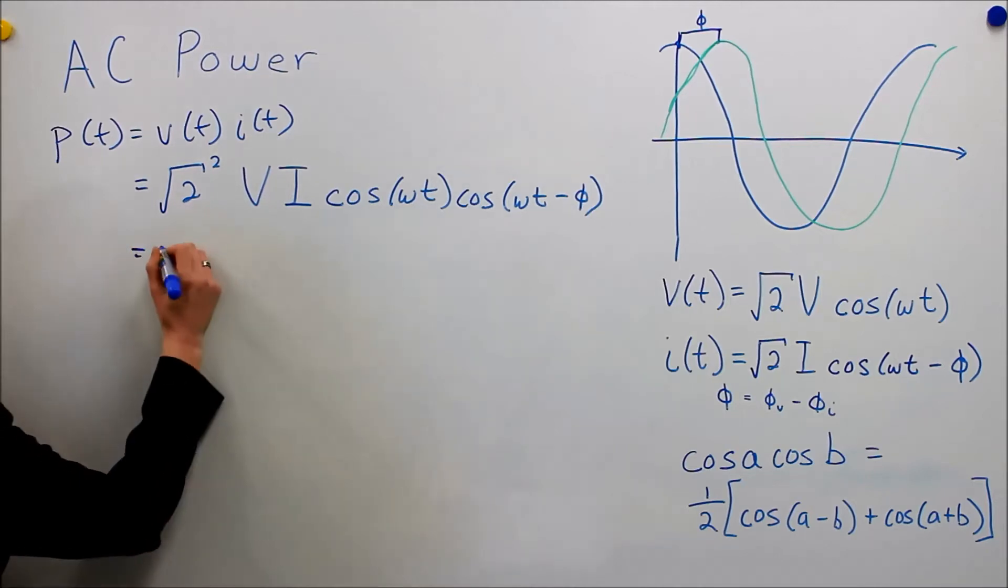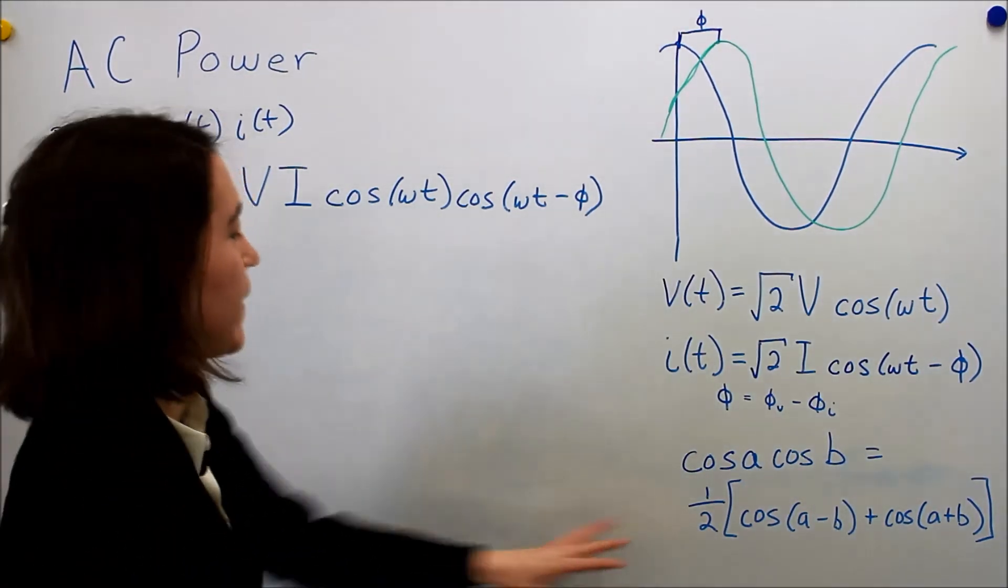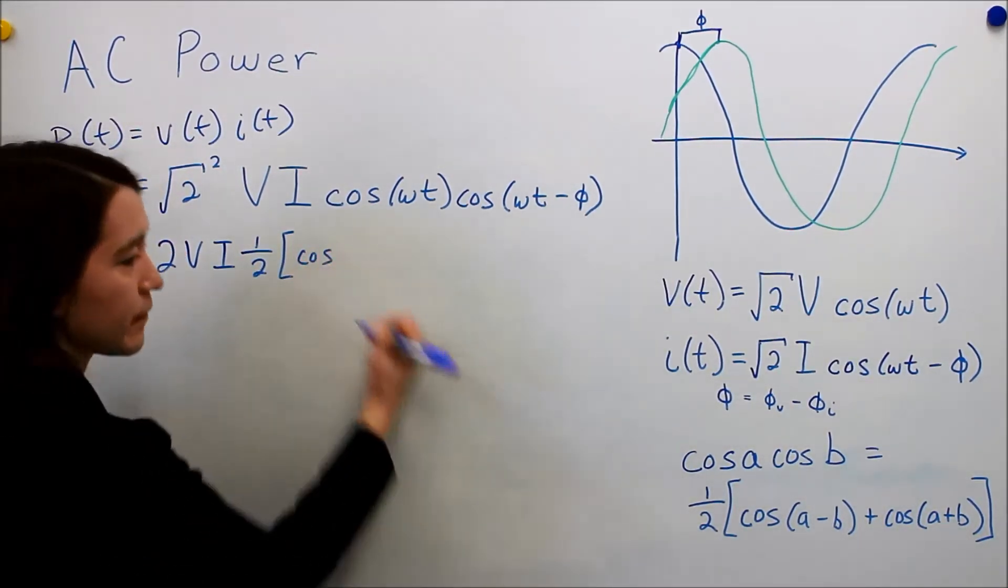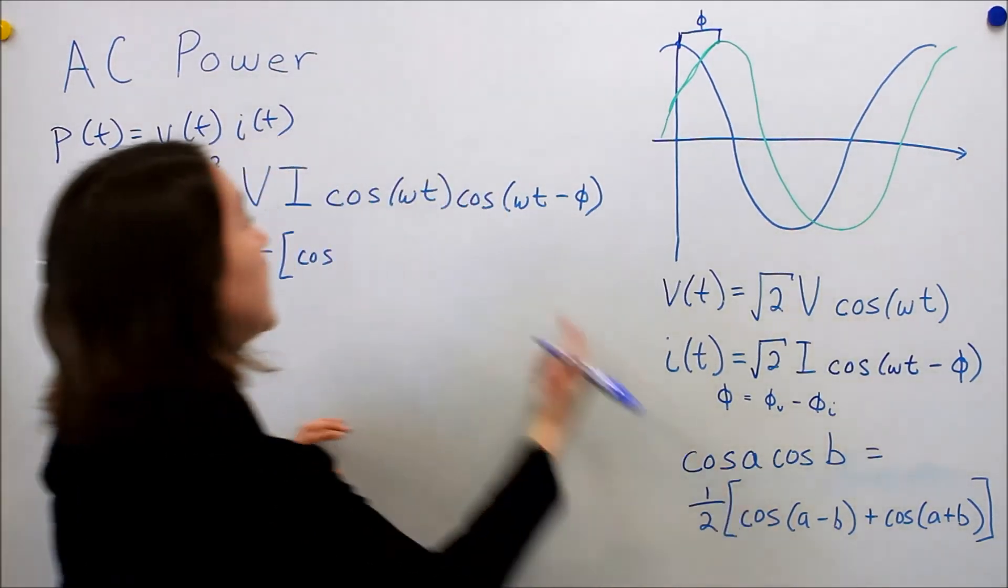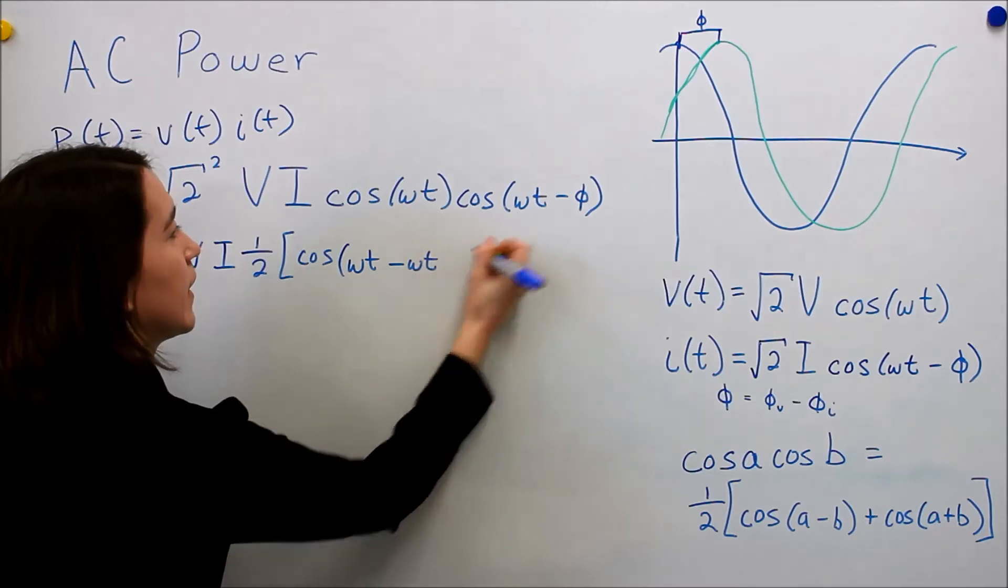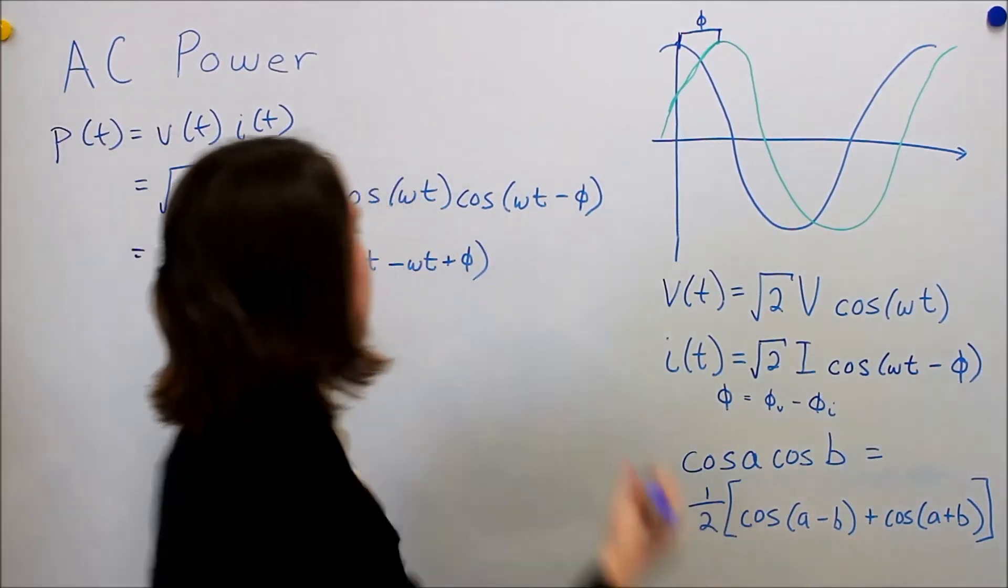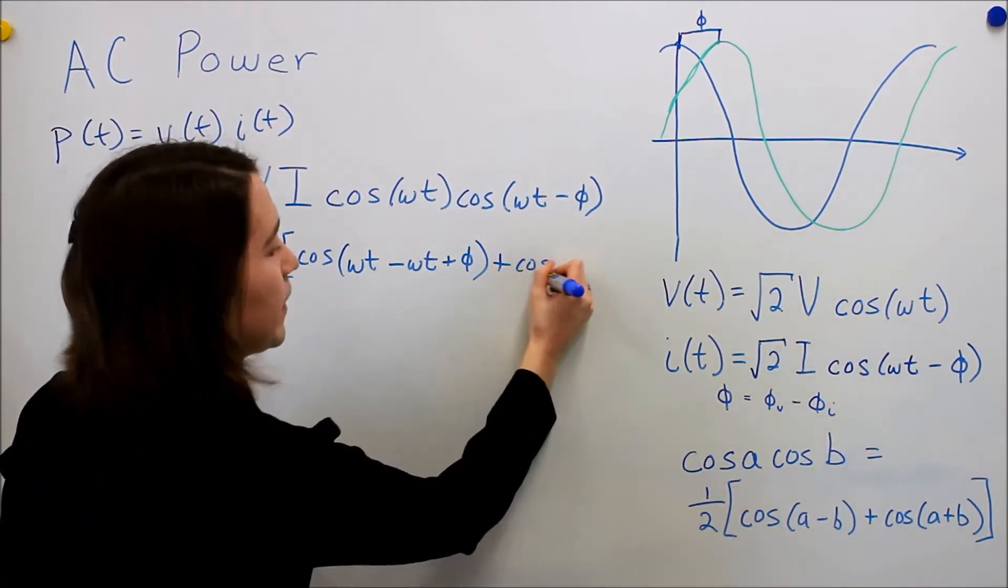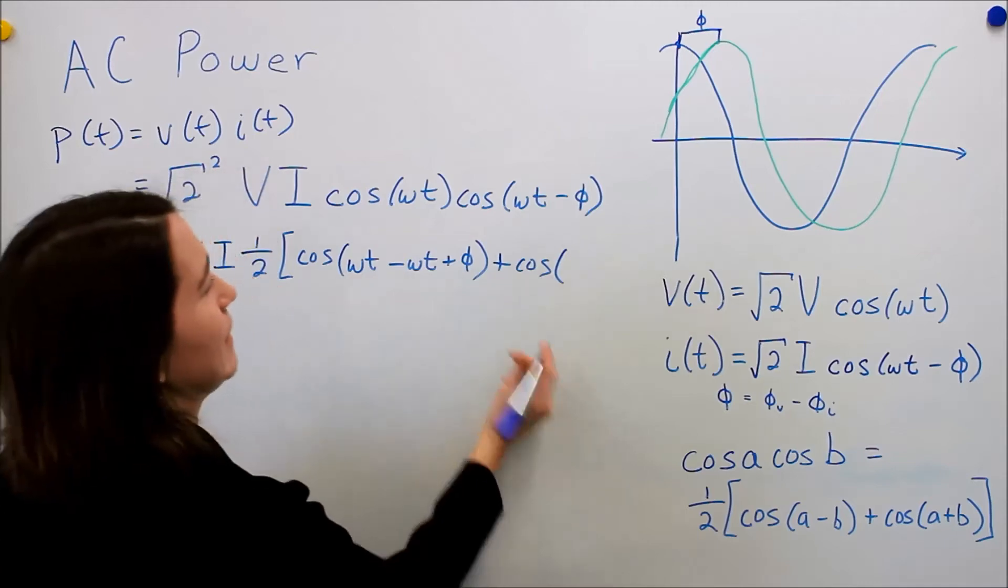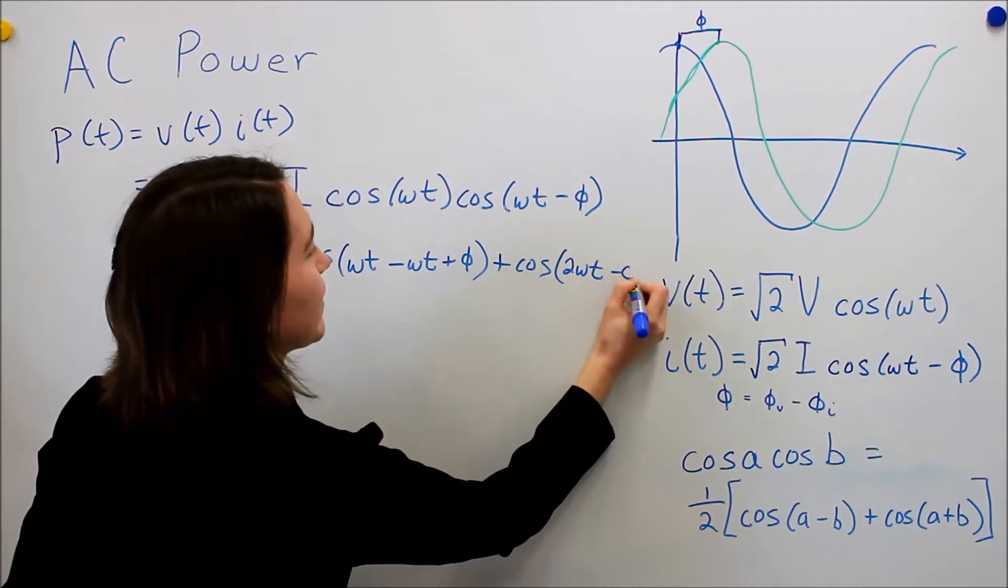So first we'll just make this 2 v i. And now we're going to break apart this. So we're going to get 1 half here. And we're going to do the cosine. We need to subtract these two values. So we get omega t minus omega t. And I'm going to carry the negative plus phi. Okay, and then we're going to add cosine. And then we're going to add these two values together. So we're going to get, I'm going to do some pre-adding. So we're going to add these together. 2 omega t minus phi.